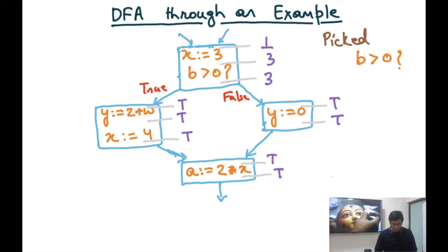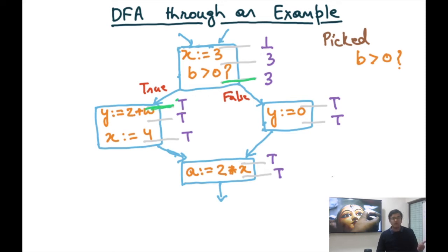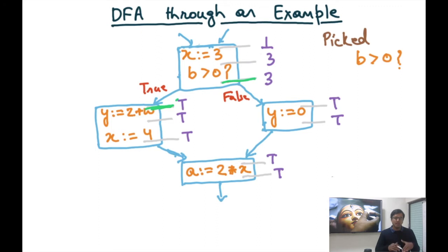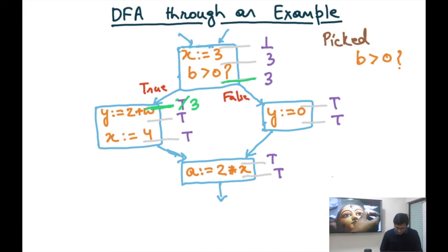We repeat the procedure. Notice that the entry points of the successor basic blocks now each have only one predecessor with value 3. The rule says if the predecessor has a constant value, the successor also gets that constant value. So both entry points of the true and false branches should be updated from top to 3.